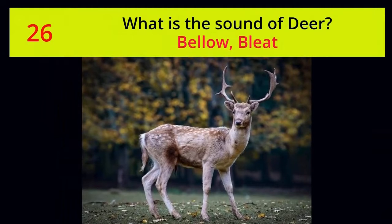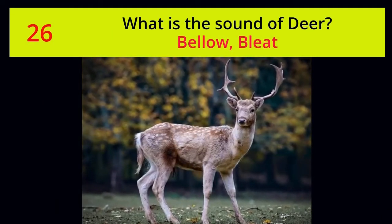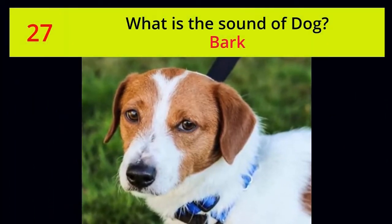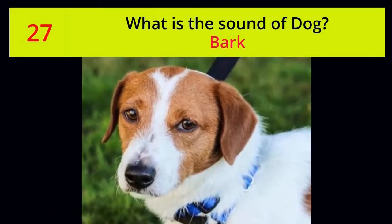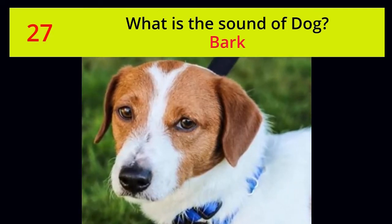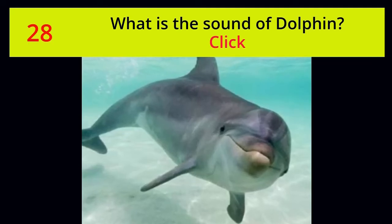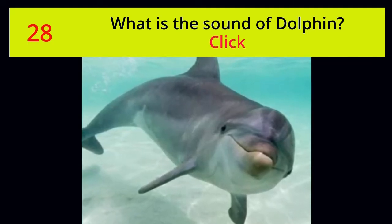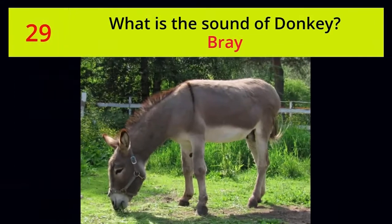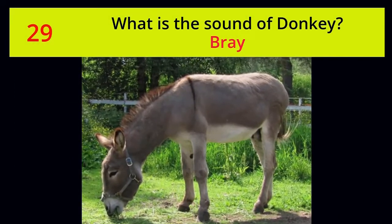What is the sound of deer? Bellow. Bleat. What is the sound of dog? Bark. What is the sound of dolphin? Click. What is the sound of donkey? Bray.